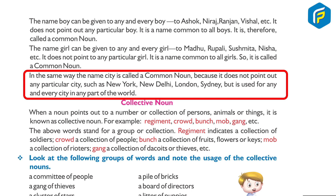In the same way, the name 'city' is called a common noun because it does not point out any particular city such as New York, New Delhi, London, or Sydney, but is used for any and every city in any part of the world.